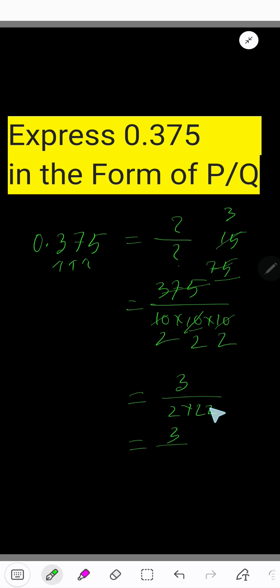That is, 2 times 2 is 4, 4 times 2 is 8. So 3 by 8.